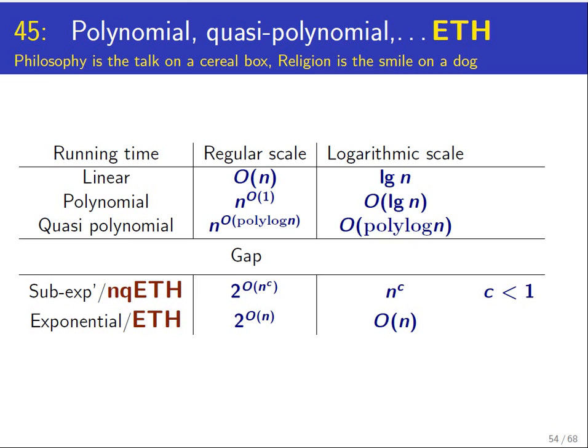ETH is already a very popular tool in fixed parameter tractability hardness results. More recently there was a lot of excitement because people showed conditional lower bounds on things like computing the Fréchet distance or even approximating the Fréchet distance between curves, and also things like lower bounds for edit distance and similar problems. There is a lot of recent activity using ETH.